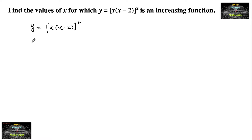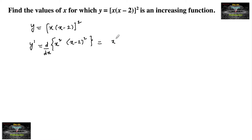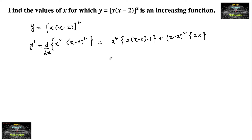Let's differentiate this. y' is equal to — we can write this as x² · (x-2)². By using the product rule (u·v rule): x² · d/dx[(x-2)²] which gives 2(x-2)·1, plus (x-2)² · d/dx[x²] which gives 2x.